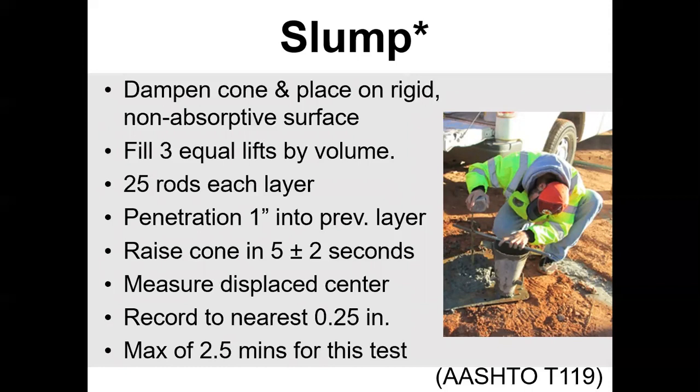After lifting the cone, invert it, place your rod on top of that cone, and measure how much the concrete fell — measuring the middle of the displacement to the nearest quarter inch. The cone is 12 inches tall. Unless it's self-consolidating concrete, you usually don't get a 10-inch slump or greater — there's another test for that. You get about two and a half minutes to complete this test.